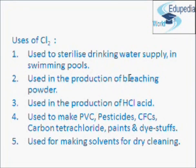Now, uses of chlorine. Chlorine is used to sterilize drinking water supply and the water in swimming pools, because chlorine is a disinfectant — it kills germs like bacteria present in water and makes it safe. It is used in the production of bleaching powder and hydrochloric acid. Chlorine is used to make plastics such as polyvinyl chloride (PVC), pesticides, chlorofluorocarbons, carbon tetrachloride, paints, and dye stuffs. Chlorine is also used for making solvents for dry cleaning.